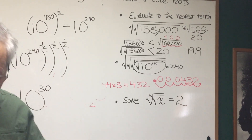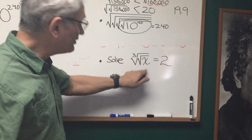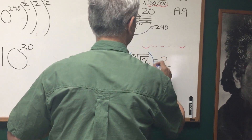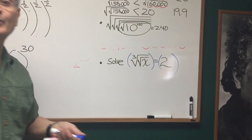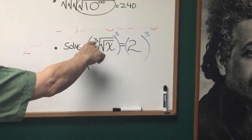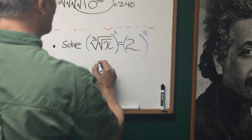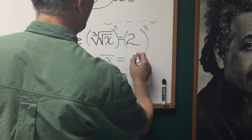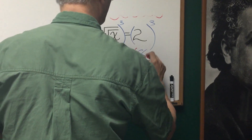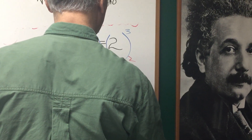Now let's go to this final problem, which is an equation. Solve: the cube root of the square root of x equals 2. First, get rid of the cube root by taking the third power of each side, since the inverse of a cube root is cubing. This cancels the cube root, leaving the square root of x equals 2 cubed, which is 8. Then to get rid of the square root, square both sides: x equals 8 squared, which is 64.